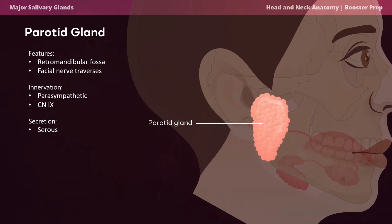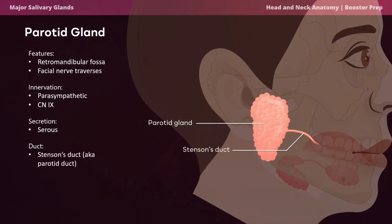The secretions of the parotid gland are serous, as the gland contains predominantly serous acini. These serous cells secrete amylase, a digestive enzyme causing hydrolysis of carbohydrates. The duct of the parotid gland is the parotid duct, more commonly known as Stensen's duct. It courses from the anterior aspect of the superficial lobe over the masseter, penetrates the buccinator muscle, and opens into the oral cavity near the maxillary second molar.